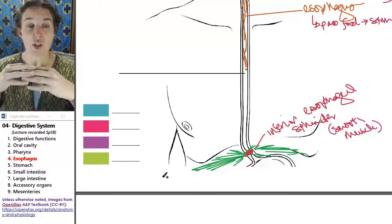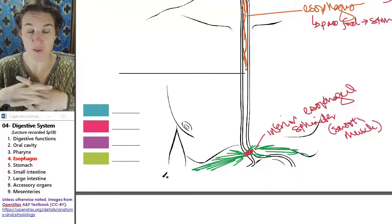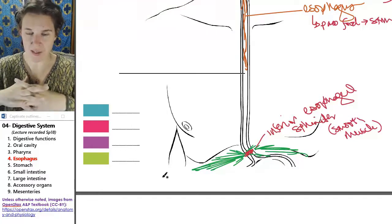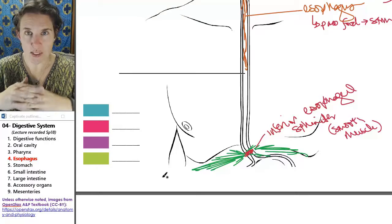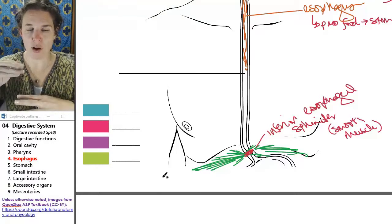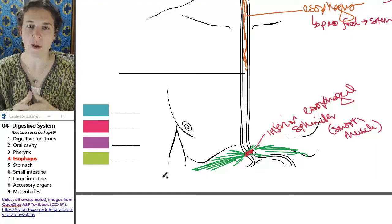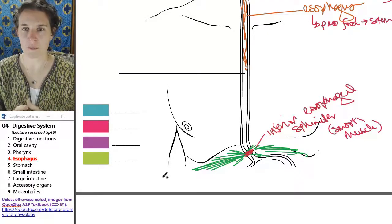So when you contract your diaphragm and shorten those fibers, it's a skeletal muscle and that actually, the contraction closes off your esophagus and prevents stuff from coming back up in normal healthy conditions.